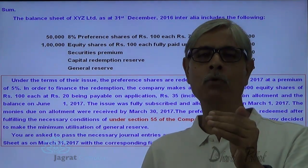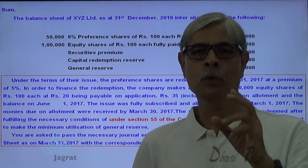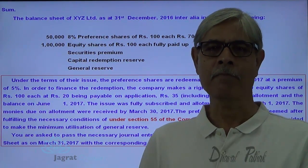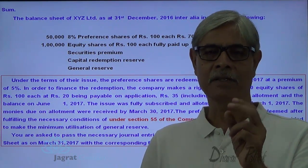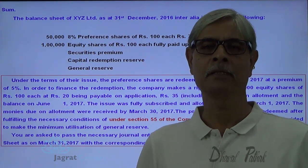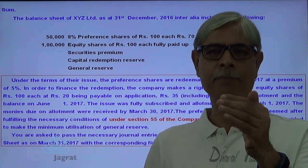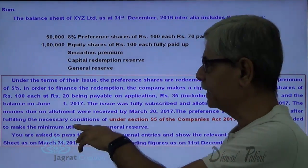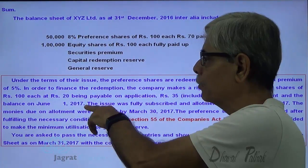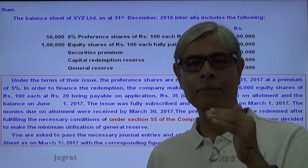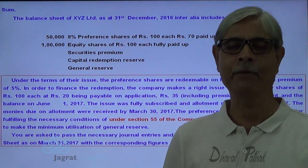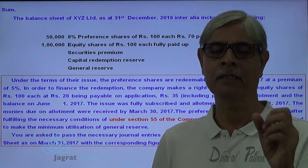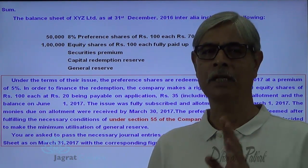It is presumed that the amount up to allotment is being received before 31st March. Whatever share capital has been received before the redemption of preference shares is available for determining the amount to be transferred to capital redemption reserve. Capital received after the redemption of preference shares is not considered for the purpose of determining the amount of capital redemption reserve. That is an important point.